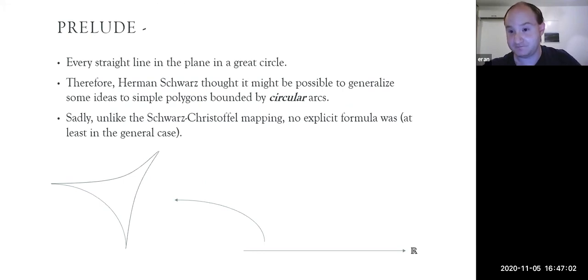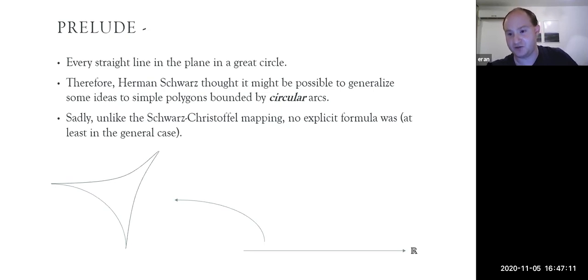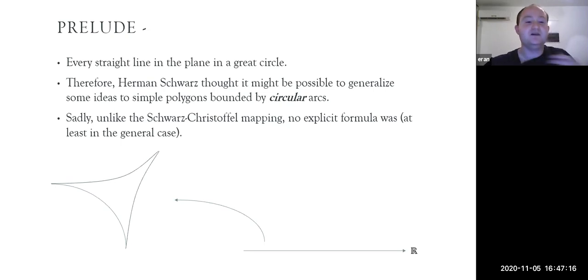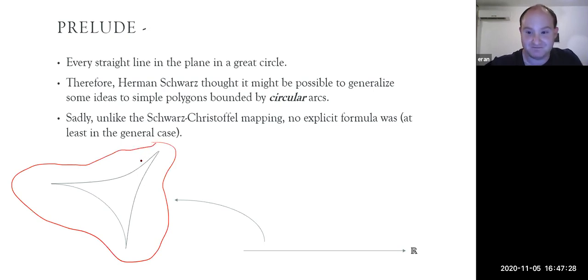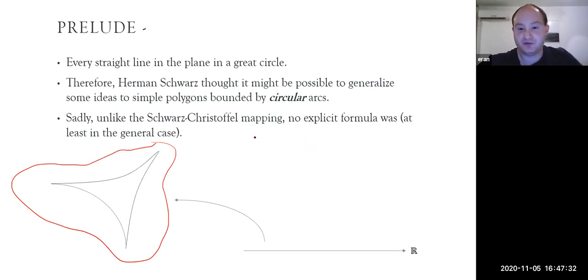Every straight line in the plane is of course a great circle on the sphere. This gave Hermann Schwarz the idea that it might be possible to generalize some arguments from his construction of the Schwarz-Christoffel map to simple polygons which are no longer bounded by straight lines but rather by circular arcs.